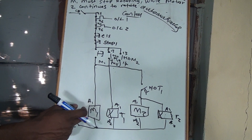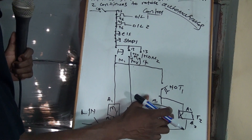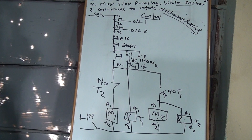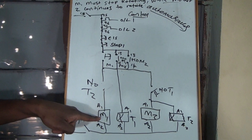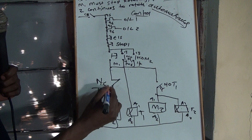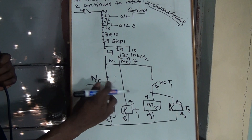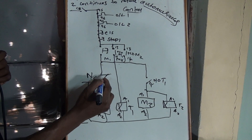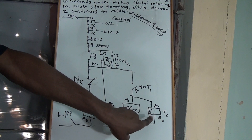Remember, Motor 1 must stop 10 seconds after Motor 2 started. So we are going to introduce a contact here — it's going to be a normally closed contact of Timer 2. So that when Timer 2 energizes, it starts counting, and after 10 seconds it will become an open circuit so that Motor 1 stops automatically. It's going to be a normally closed, not a normally open — forgive me for that error. You can write it like this or like this, both are fine. We are introducing a normally closed contact because we want it to become open after 10 seconds after Motor 2 has started rotating.